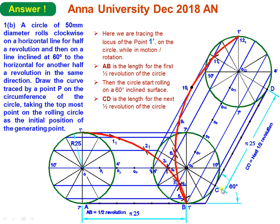The inclined path is at 60 degrees. You have to extend line AB and draw a 60-degree line tangent to the circle. The contact is established at point C. The distance CD must equal the next half revolution — that is pi×25. While rolling on this 60-degree inclined surface, the path traversed by point P follows this particular trajectory. AB is the length for the first half revolution; CD is the length for the next half revolution on the inclined surface.